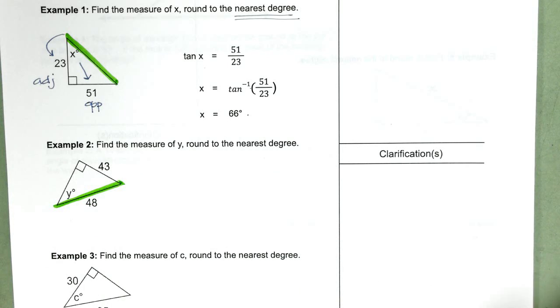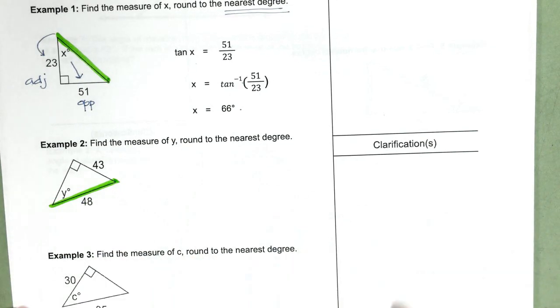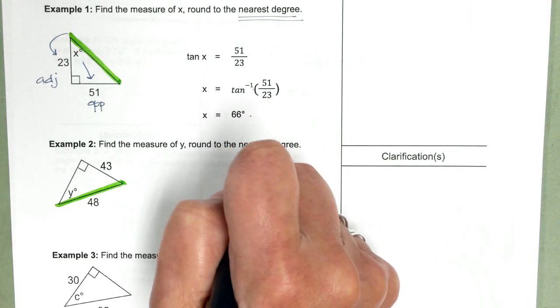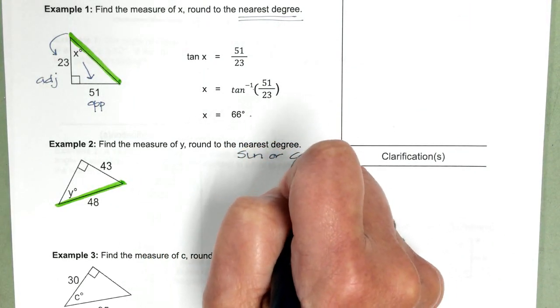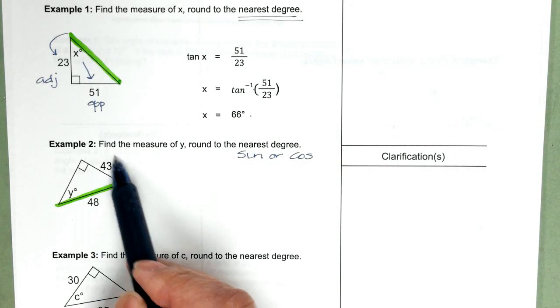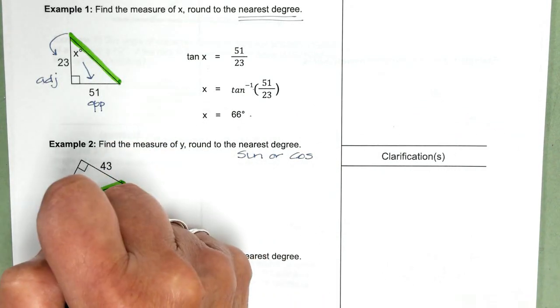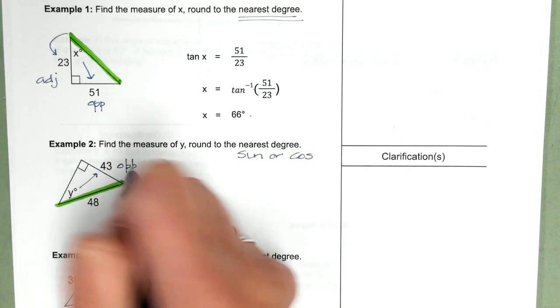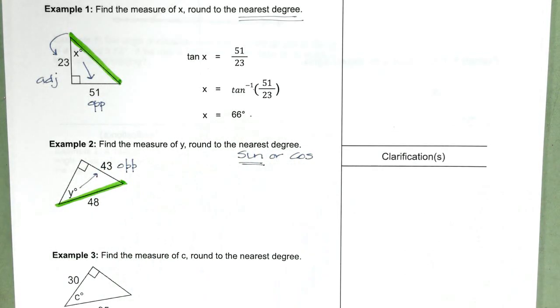Example two. Notice that I highlighted the hypotenuse. So our options here, again, are sine or cosine. So I look to see what side I'm given. And notice it is the opposite side, which means we will use sine.